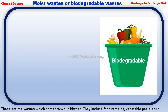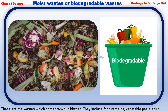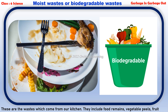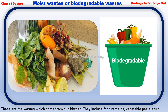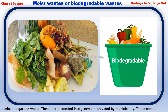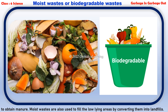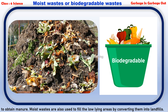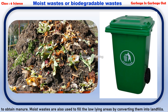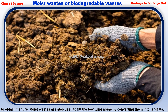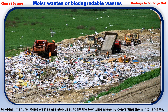Moist wastes are the wastes which come from our kitchen. They include food remains, vegetable peels, fruit peels, and garden waste. These are discarded into the green bin provided by the municipality. Moist wastes can be used to obtain manure, and are also used to fill low-lying areas by converting them into landfills.